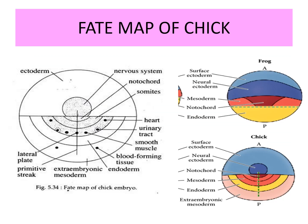Looking at the fate map of the chick, the upper portion forms the ectoderm, and in the center the nervous system is formed — this is the anterior portion. In the posterior portion, the center is formed by the notochord. Surrounding the notochord is a semicircle that forms the somites, and the next semicircle forms the heart, urinary tract, smooth muscles, and lateral plate. The next semicircle forms the endoderm, and the last semicircle is responsible for the formation of extra-embryonic membranes, plus we have the blood-forming tissues.